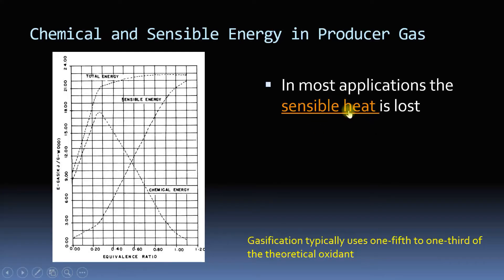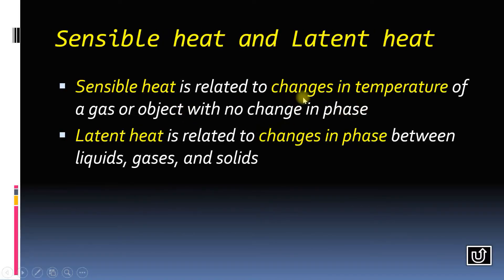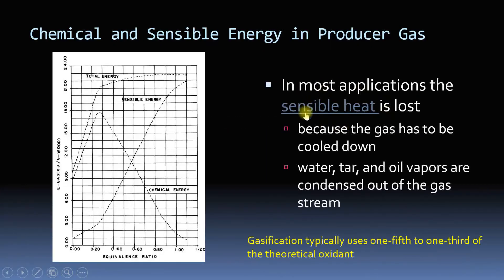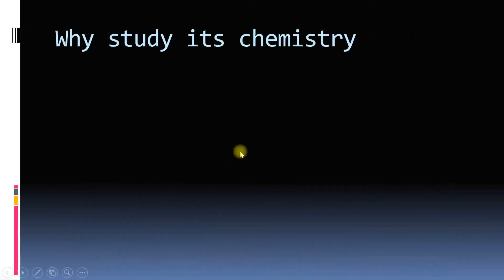Sensible heat is the heat related to changes in temperature. There is another latent heat which relates to change in phase. In most applications when you want to use it for engine, you have to cool it down and then these vapors are condensed, so the sensible energy is lost. This diagram has been taken from this reference.